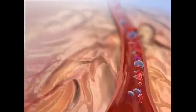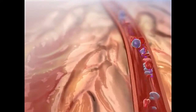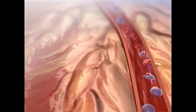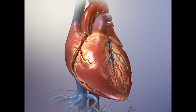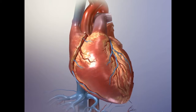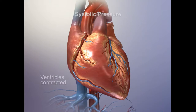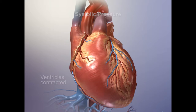Blood pressure is used as a measure of normal cardiovascular function. The point of highest pressure, when the ventricles are contracting and the pressure is highest in the arteries, is called systolic pressure. The point of lowest pressure, when the ventricles are relaxed and the semilunar valves are closed, is called diastolic pressure.